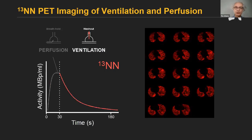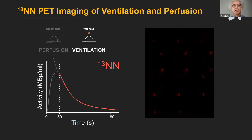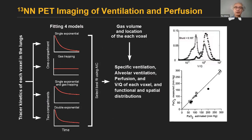When the subject resumes breathing, ventilation leads to a washout of the tracer. From that example you can appreciate the high sensitivity we have with PET imaging for tracer concentration and kinetics. We take advantage of the tracer kinetics of each voxel of the lungs and feed them into four models: a one-compartment single exponential model, a gas trapping model, and two two-compartment models combining single exponential with gas trapping or a double exponential model.